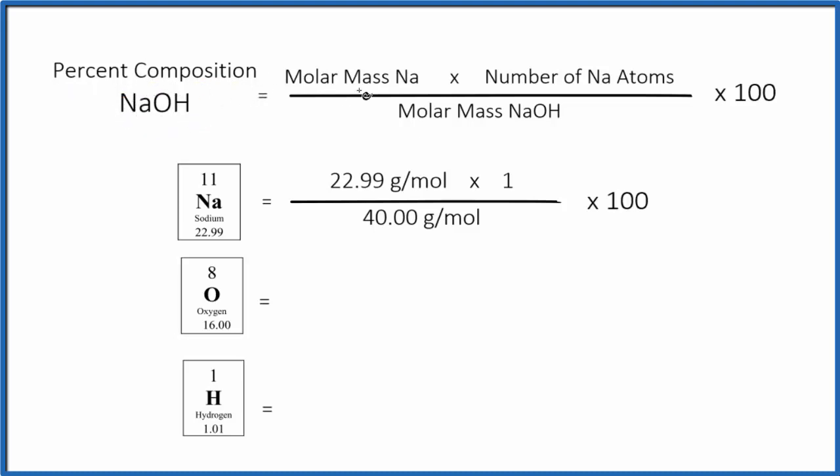So the way we do that, we find the molar mass for the sodium atom. That's 22.99. We find that on the periodic table. We multiply that by the number of atoms. We only have one sodium atom here. So our one sodium atom we put right here.